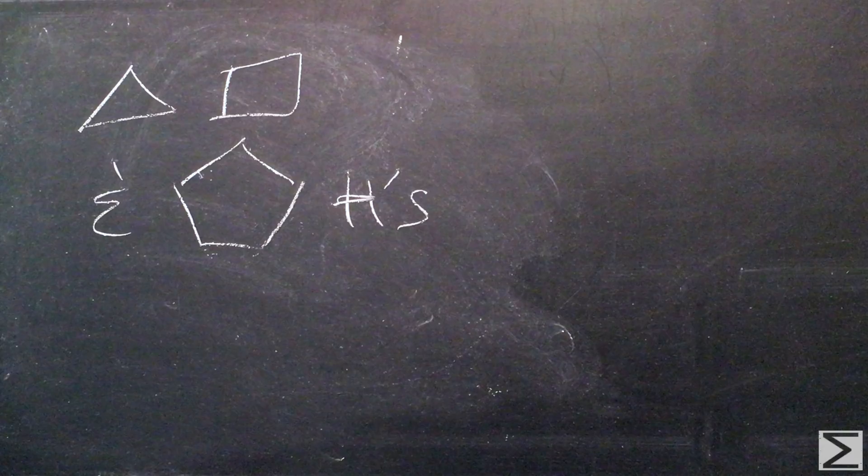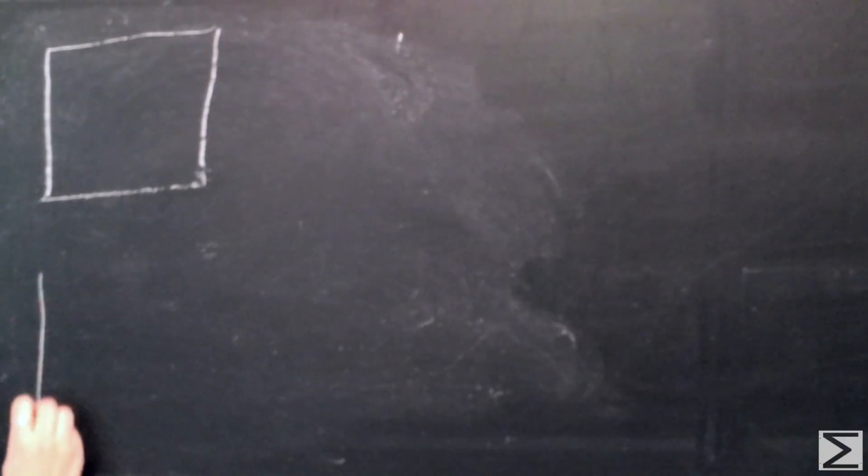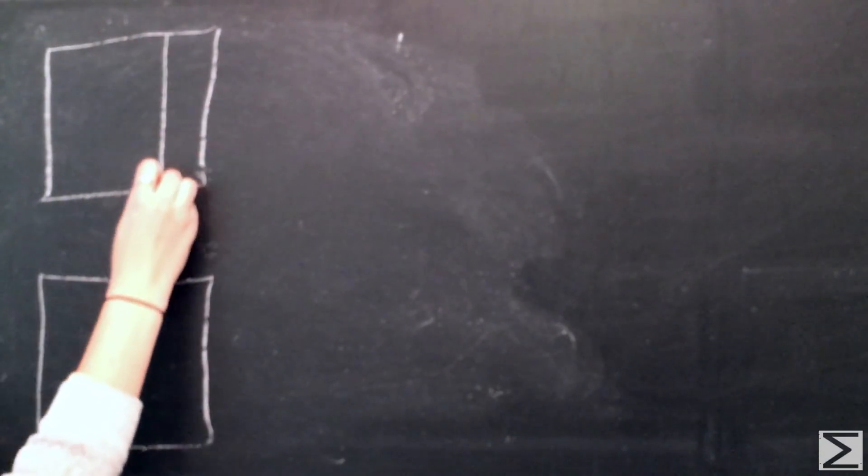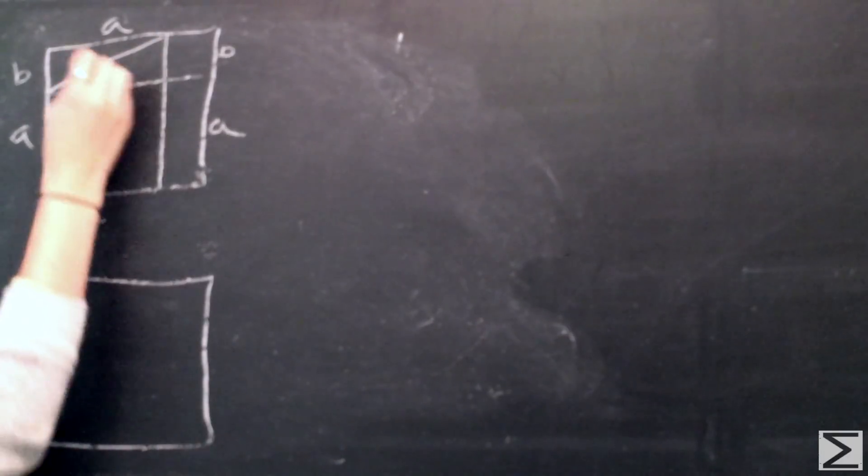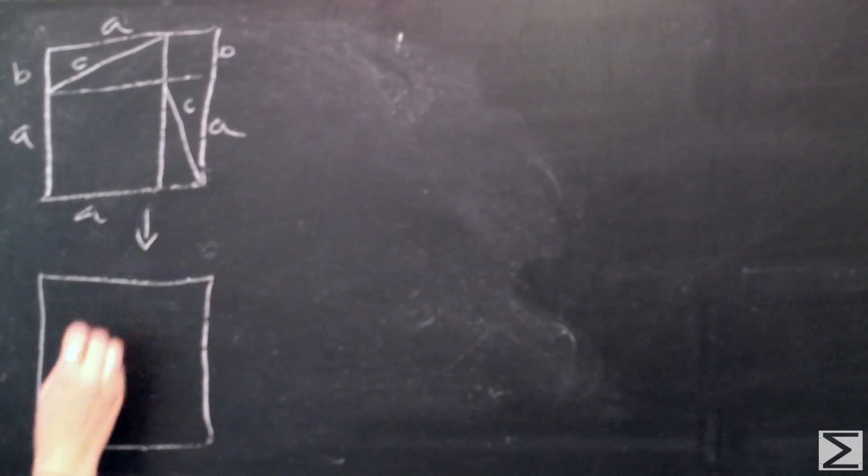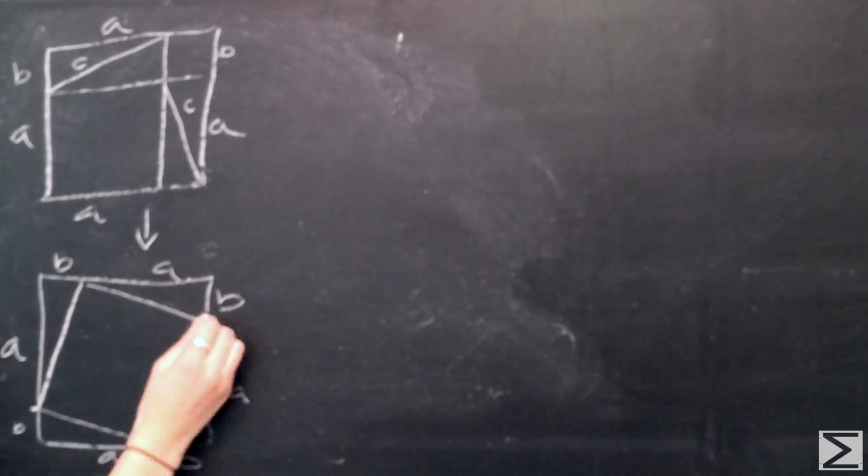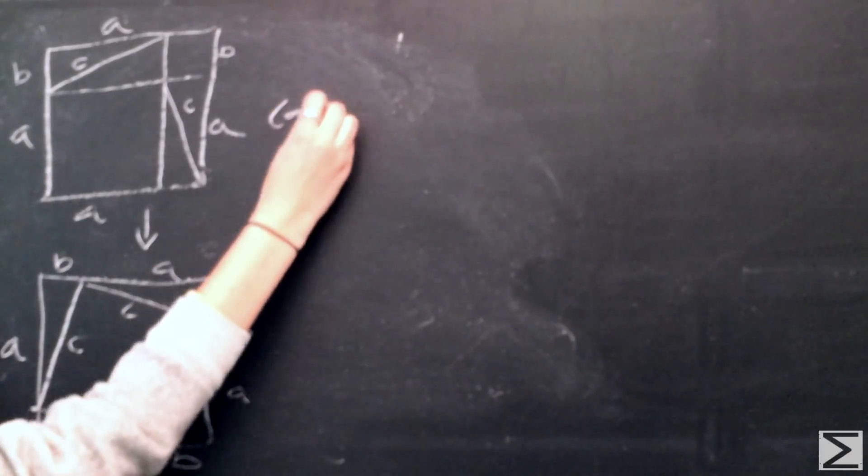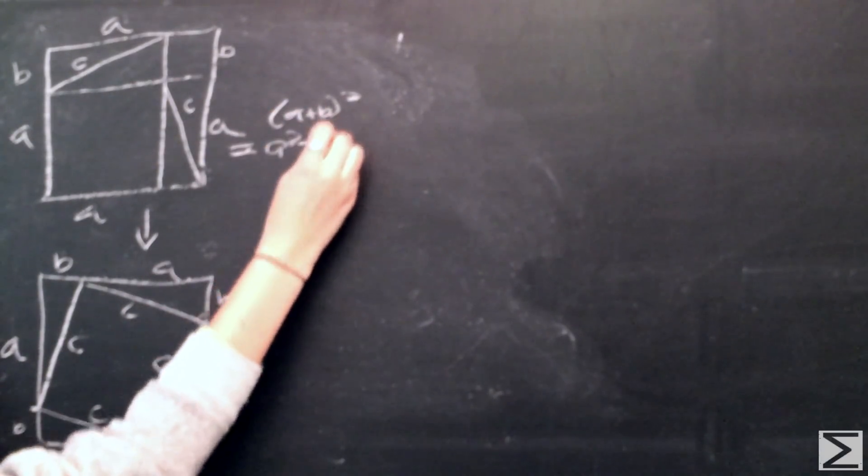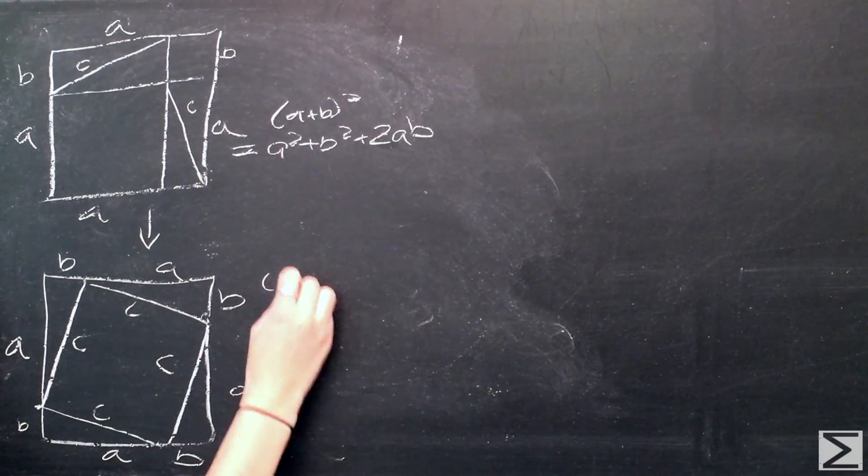A square of sides A plus B is divided into two smaller squares with sides A and B respectively, and two equal right rectangles with sides A and B. These two equal rectangles can be split each into two equal right triangles by drawing the diagonal C. The four triangles can then be arranged along the edges of another equal square of sides A plus B.